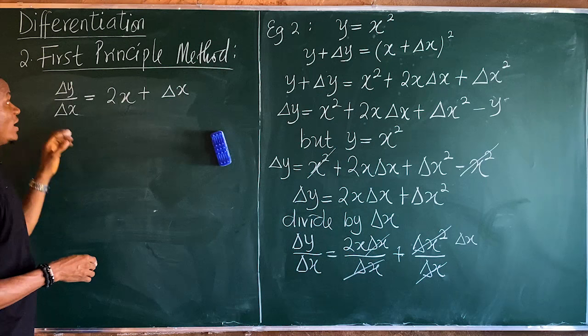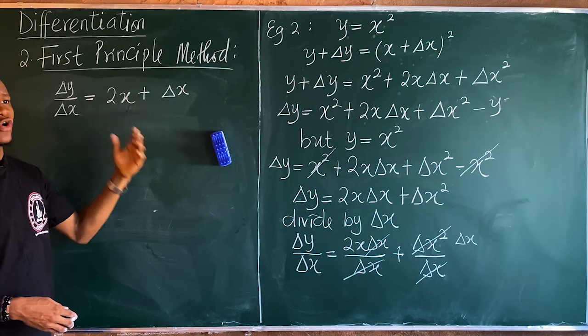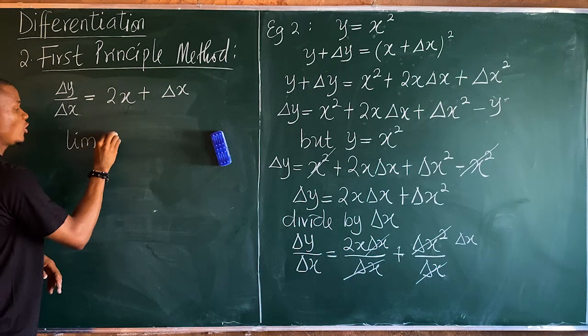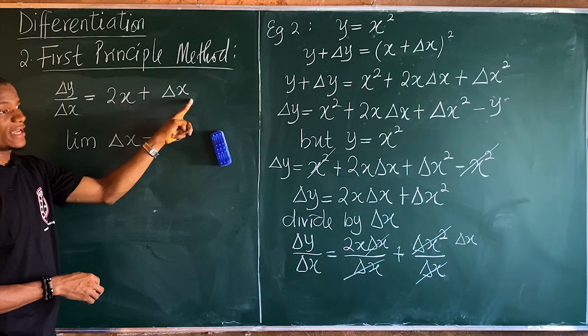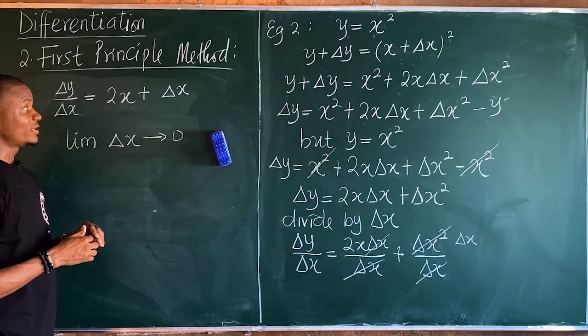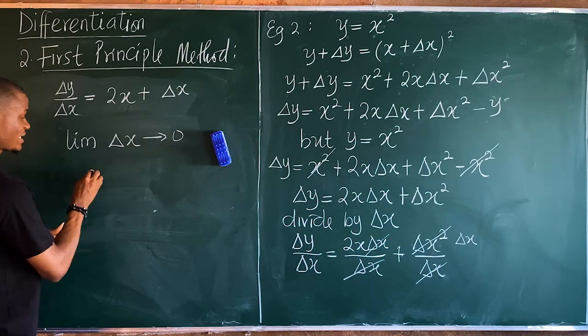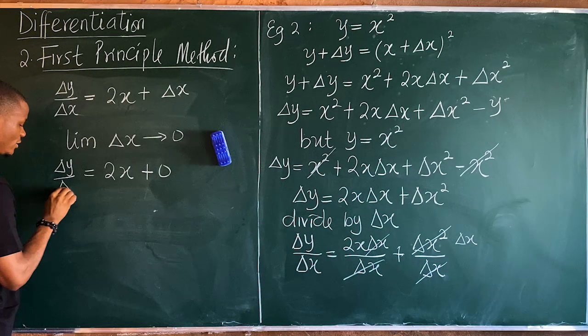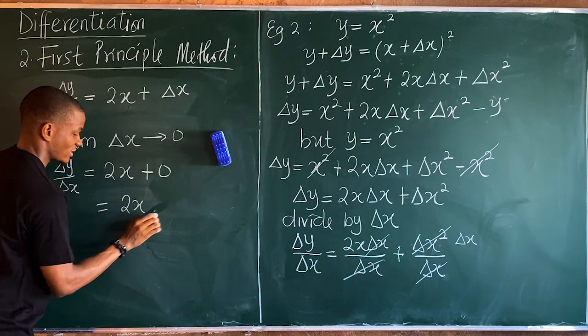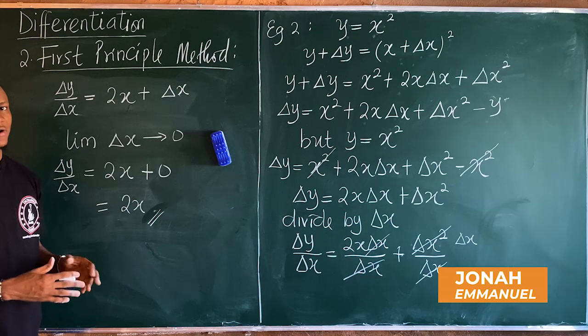Notice that unlike example one, we still have a Δx term here. When this happens, we take the limit as Δx approaches zero. Wherever we see Δx, substitute zero: Δy/Δx equals 2x plus 0, which gives 2x. This matches the general method result, confirming the first principle method of differentiation.